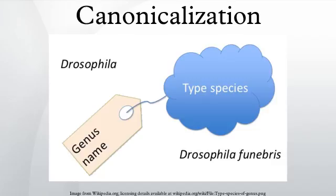In morphology and lexicography, a lemma is the canonical form of a set of words. In English, for example, run, runs, ran, and running are forms of the same lexeme, so we can elect one of them — run — to represent all the forms. Lexical databases such as WordNet use this kind of representation. Lemmatization is the process to convert a word into its canonical form.